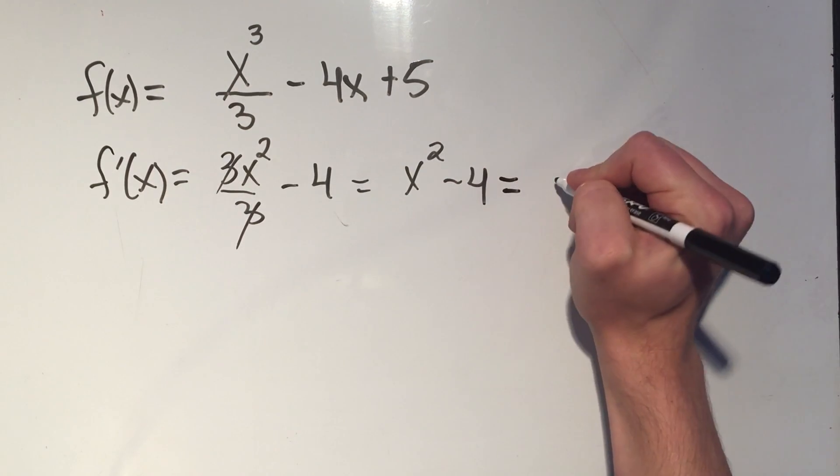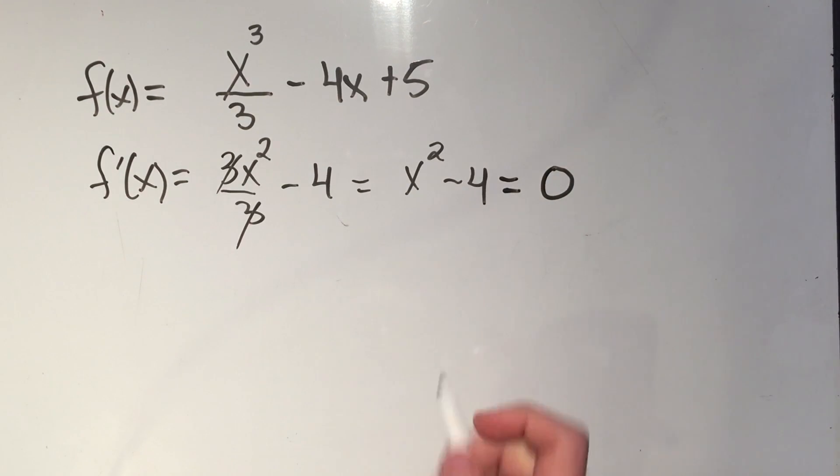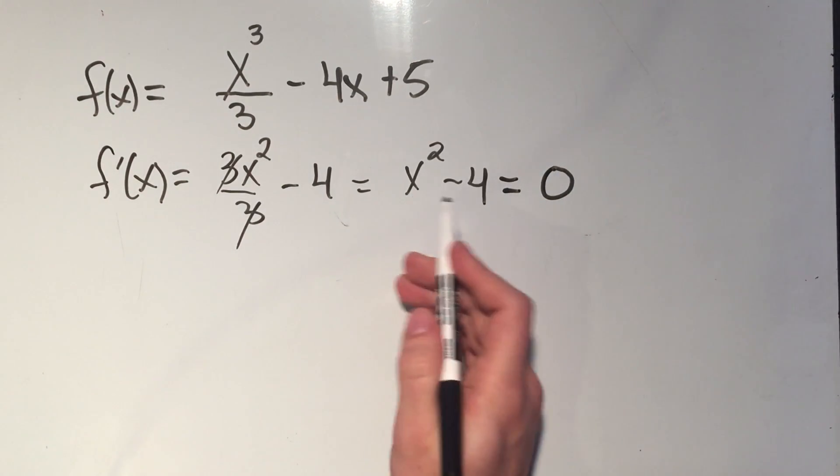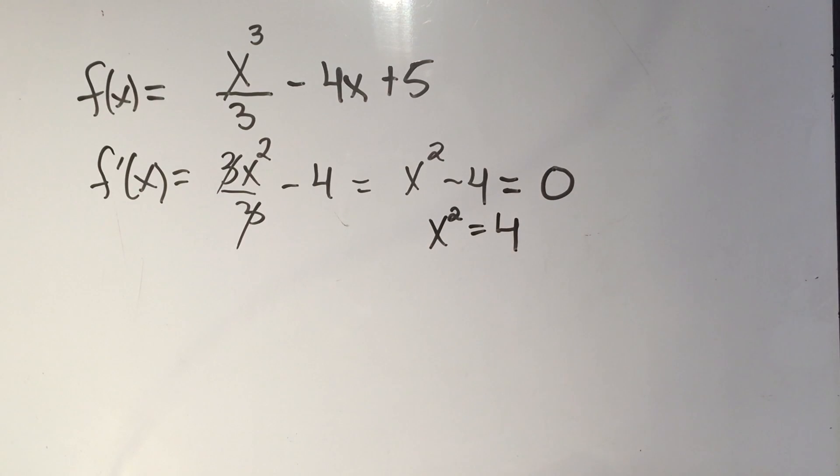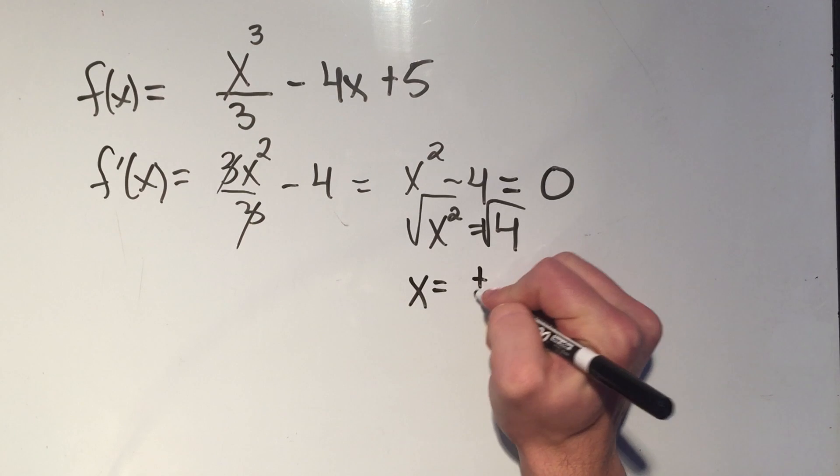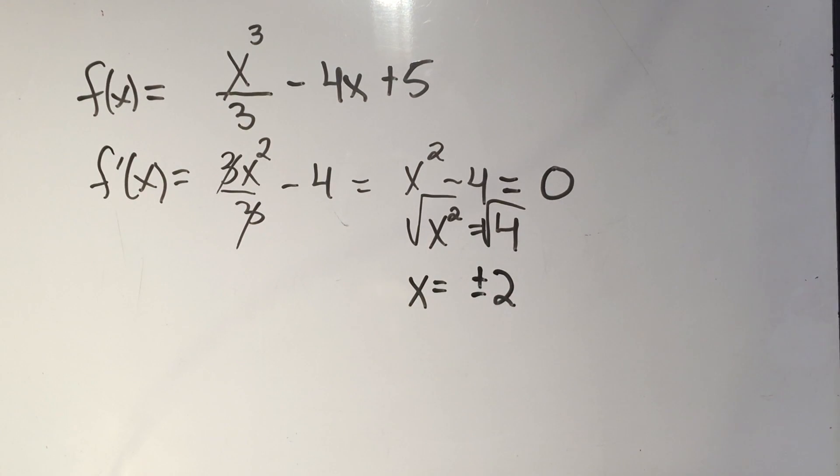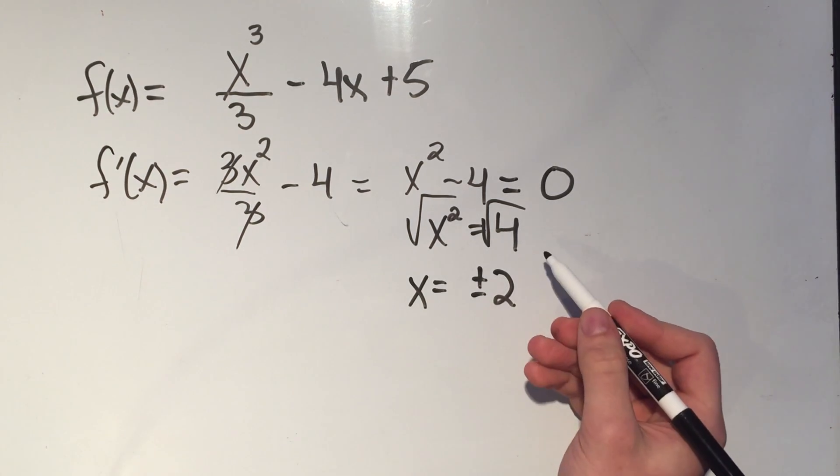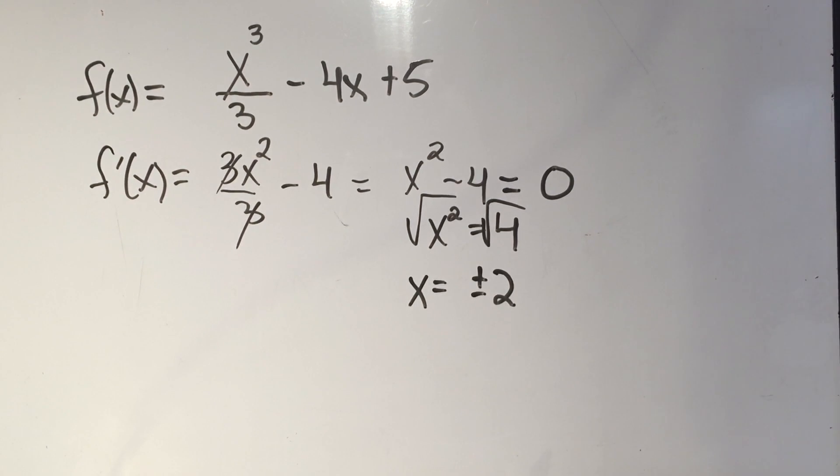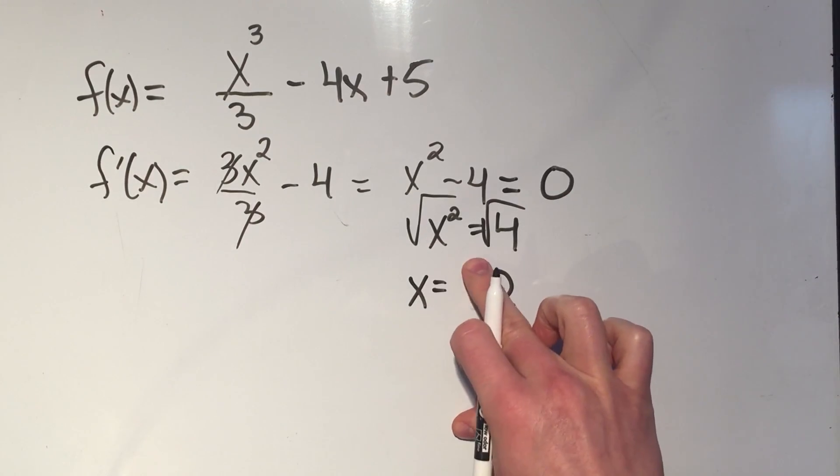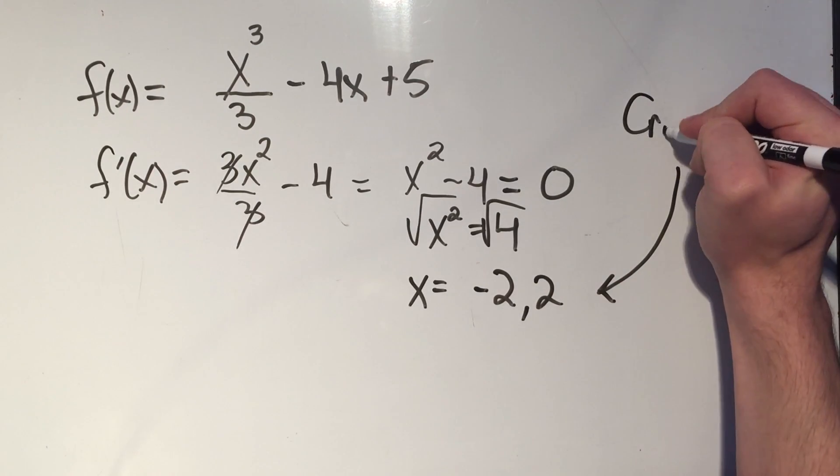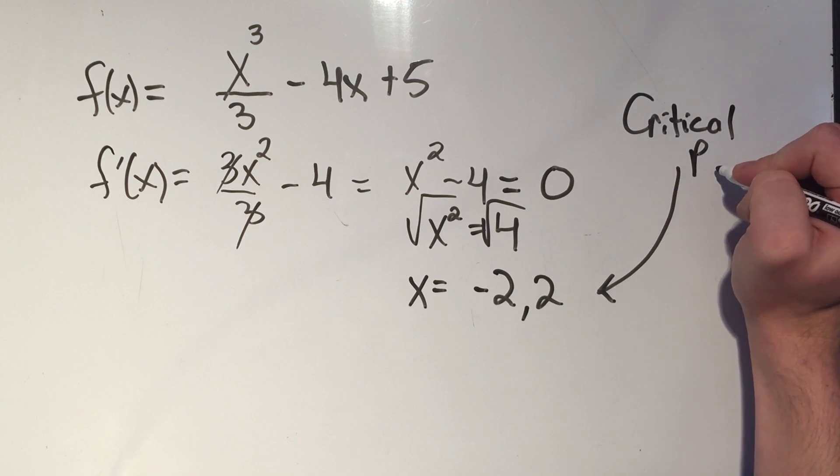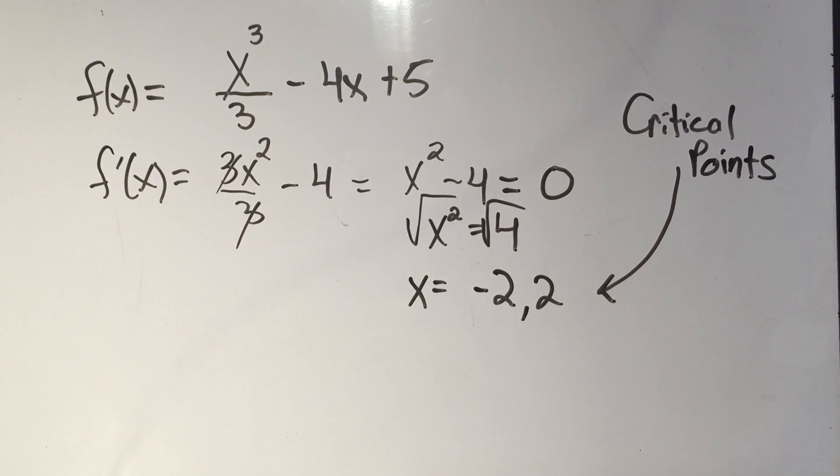And what do I do with the first derivative? I set it equal to zero to find the critical points. And this is a pretty easy equation to solve. You could either factor this, or I'll just add four to both sides, have x squared equals four. And if I want x, I'll square root both sides. So that means x is plus or minus two, you can't forget the plus or the minus, you will lose half of your answers. Whenever you take an even root, don't forget plus and minus. So two, minus two and two. These are our critical points, right? Critical points are where the first derivative equals zero.